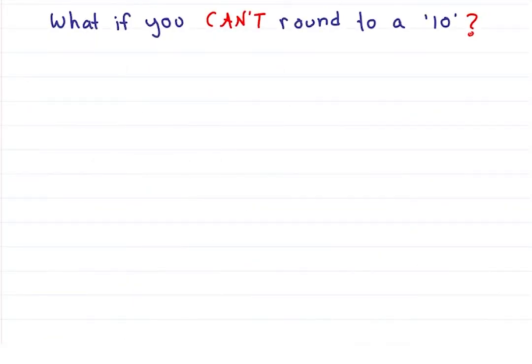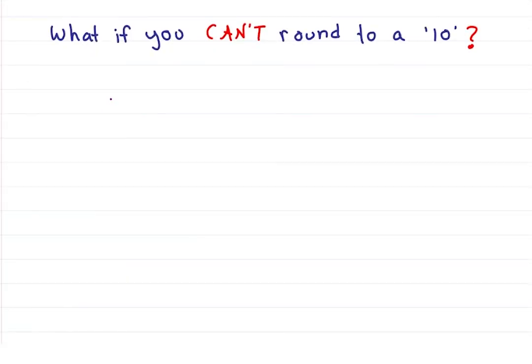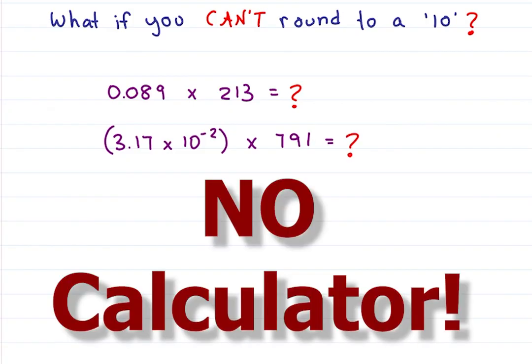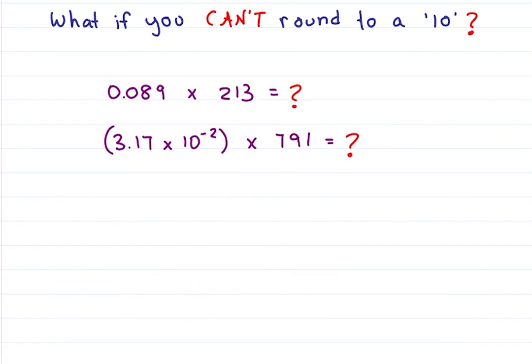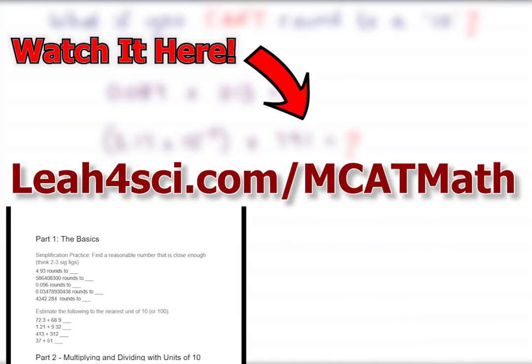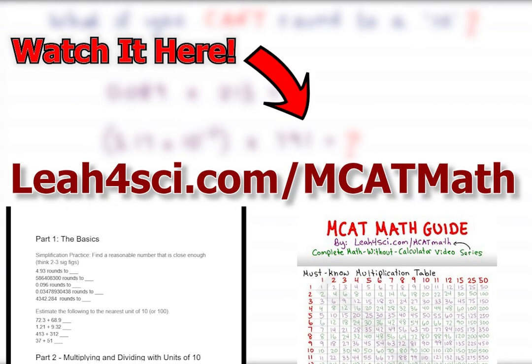What if you can't round to a factor of 10, like 0.089 times 213 or 3.17 times 10 to the minus 2 times 791? Still without a calculator. That's exactly what I cover in my next video, which you can find on my website along with my MCAT math worksheet practice quiz and cheat sheet at leah4sci.com slash MCAT math.